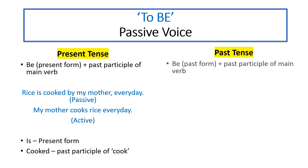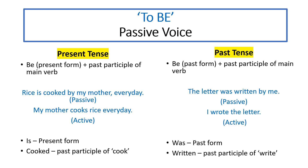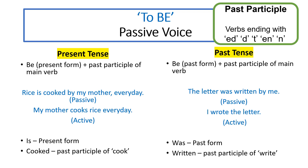In past passive, the past form of the 'be' verb is used, along with the past participle of the main verb. For example: 'The letter was written by me.' This is passive voice. Its active form is: 'I wrote the letter.' Here 'I' is the subject in active voice, but in passive voice, 'the letter' moves to the front. 'Written' is the past participle of 'write'.